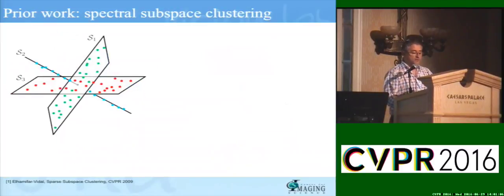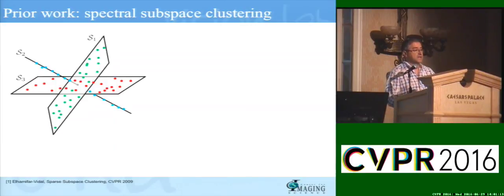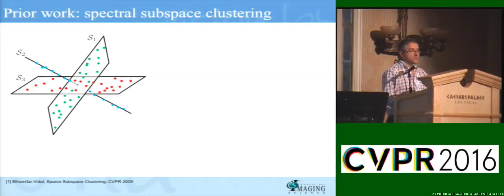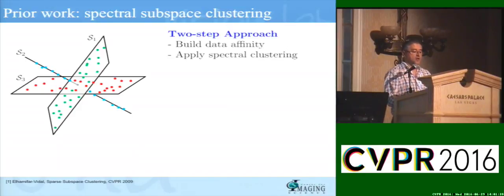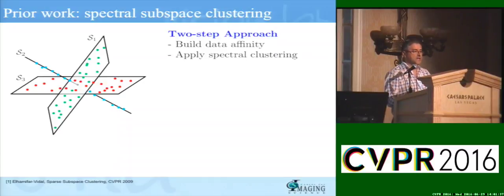Let me tell you a little bit about how subspace clustering is currently done. First of all, notice that this is a clustering problem, but classical clustering methods such as k-means are not applicable, because you have these subspaces that are intersecting with each other. So after years of work, the community has converged on using a two-step approach where you first build an affinity matrix that measures the similarity between pairs of points, and then you apply spectral clustering to it.